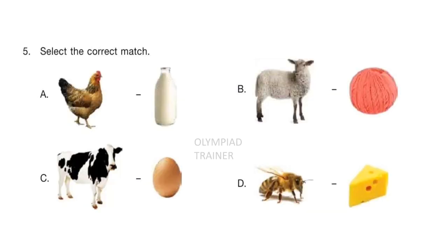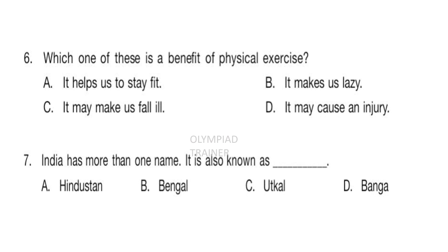Question 5: Select the correct match. Look at the options — A is hen and milk, B is sheep and wool, C is cow and egg, D is bee and cheese. The correct answer is option B — Sheep and wool. Question 6: Which of these is a benefit of physical exercise? Answer is option A — It helps us to stay fit.